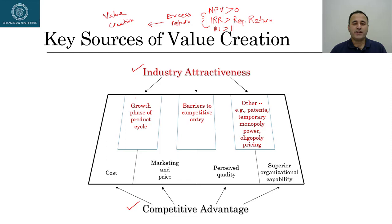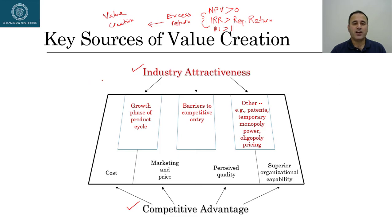Within industry attractiveness, there are some industry-specific factors, and if your company is operating within that industry, it's a competitive advantage for you. Industry attractiveness includes, for example, the growth phase of a product life cycle. In early 2000 in Pakistan, there was a boom in the telecommunication sector. Mobile phones were very new to the market and they were marketing those products on a mass scale. If you were a company operating within the telecommunication industry, that specific industry attractiveness was a very big source of value creation for your shareholders.